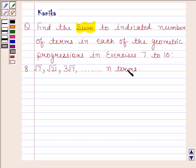Before solving this question, we should know that sum of first n terms of GP, that is S_n, is given by A into R to the power n minus 1 upon R minus 1, if R is greater than 1.